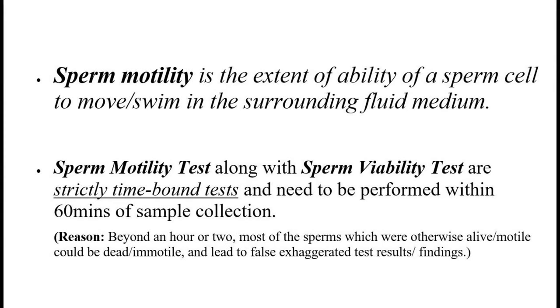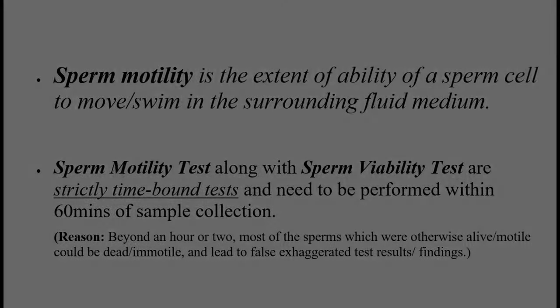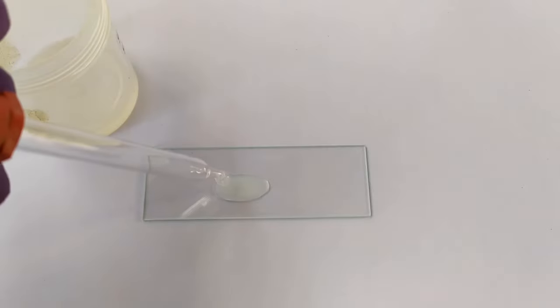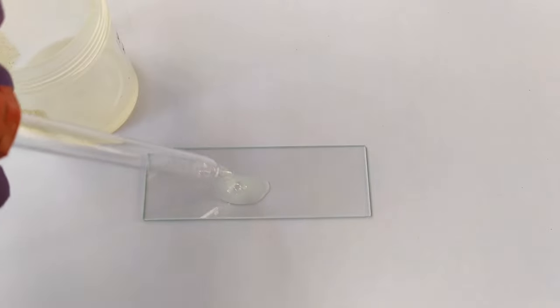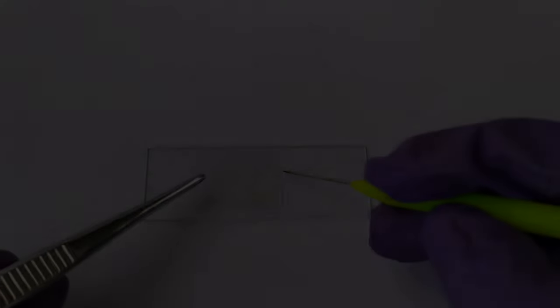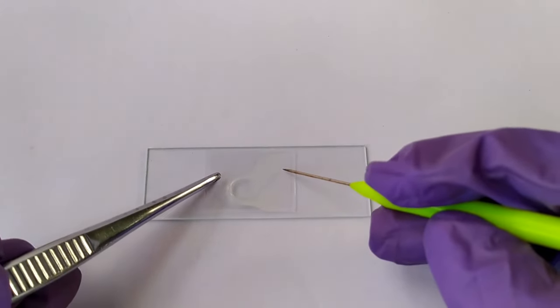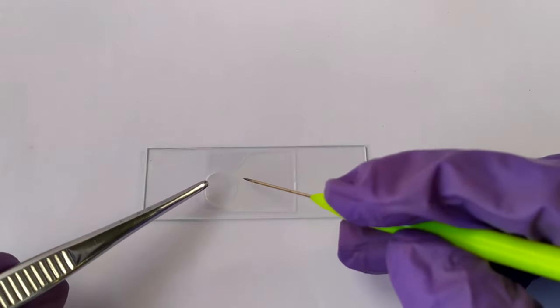The sperm motility test is done within 60 minutes of sample collection. Sperm motility is the ability of a sperm cell to move in the surrounding fluid medium. A drop of liquefied semen sample is taken on a glass slide and gently covered with a cover slip. The slide is immediately observed under the 40x objective of the microscope.